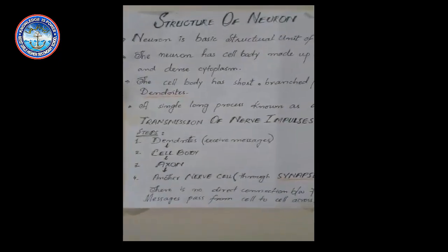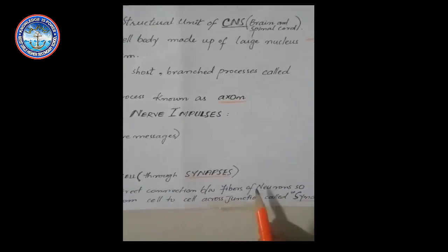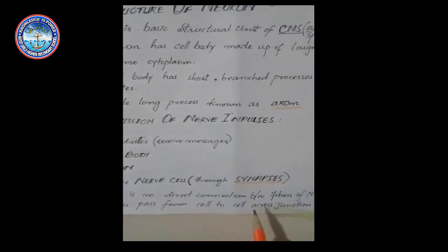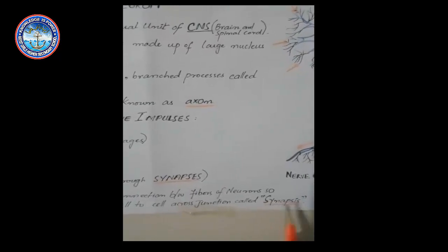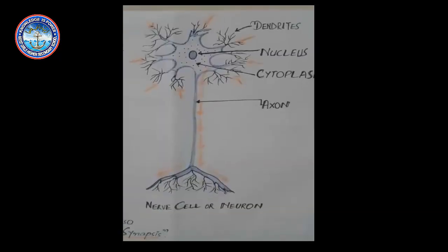There is no direct connection between the fibers of the neuron that are axons, so messages pass from cell to cell across a junction called synapses. Or we can say that the junction between two neurons is called synapses.